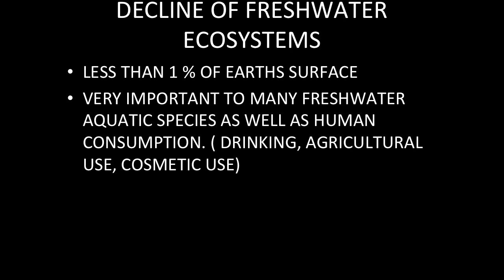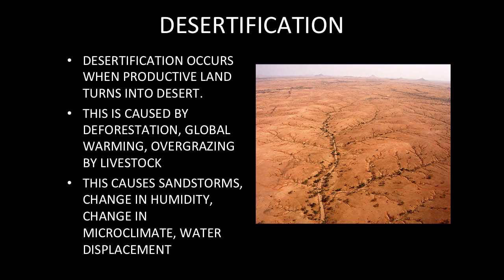Desertification occurs when productive land turns into desert. A place that could have been a very lush and green grazing ground for livestock, or somewhere where people used to see a nice savanna grassland, has completely disappeared. Many of the effects of desertification are because of human intervention.